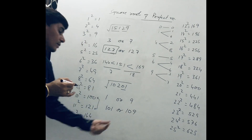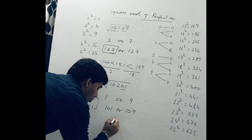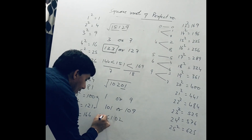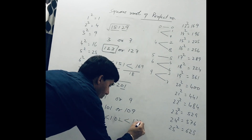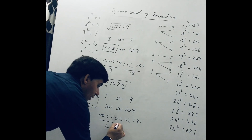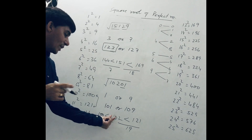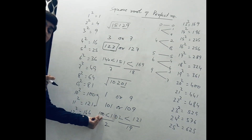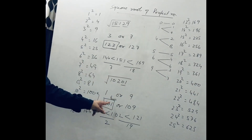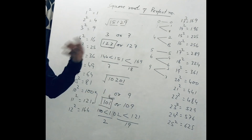Which one is the correct answer? We see 102 is greater than 100 and less than 121. The difference between 100 and 102 is 2, and the difference between 102 and 121 is 19. So 102 is nearer to 100. Therefore, 101 is the answer — the square root of 10201 is 101.